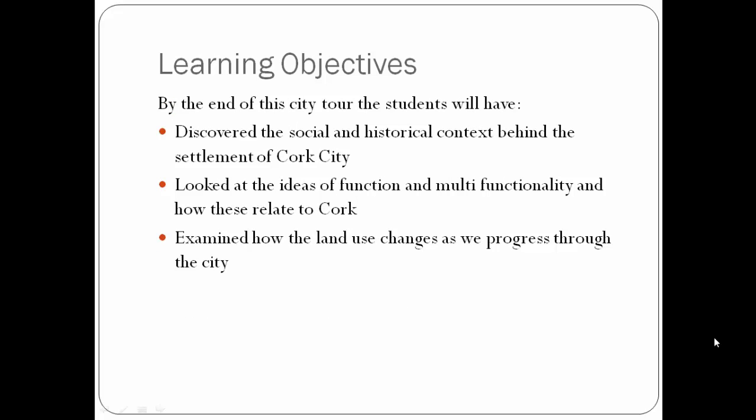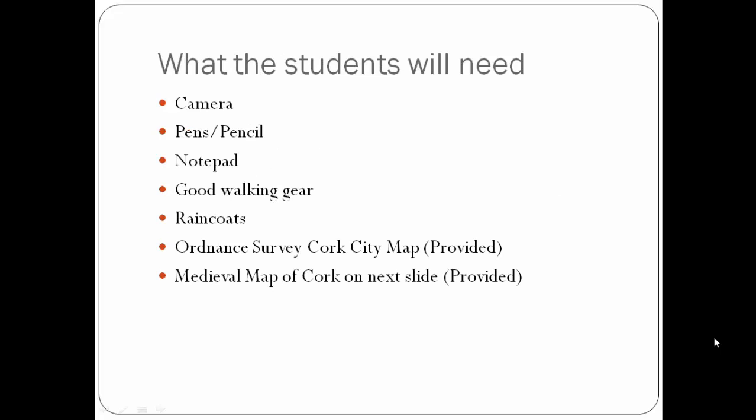The learning objectives for the fieldwork are as follows. By the end, students will have discovered the social and historical context behind the settlement of Cork City. They will have looked at the ideas of function and multifunctionality and how these relate to Cork. They will also have examined how land use changes as we progress through the city. For the field trip, students will need to bring a camera, pens or a pencil, a notepad, good walking shoes, and a raincoat. On the day, students will be provided with an Ordnance Survey map of Cork City and a medieval map of Cork.